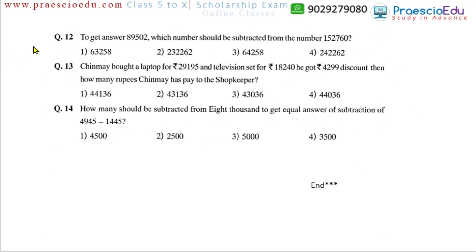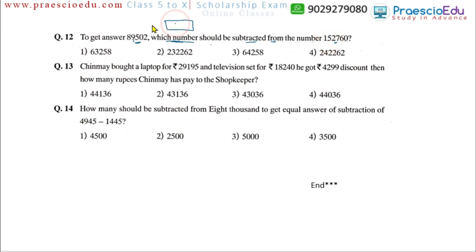Question number 12: to get the answer 89,502, which number should be subtracted from the given number? This means the given number minus an unknown box equals 89,502. Carry out this subtraction and the correct answer is option number 4.